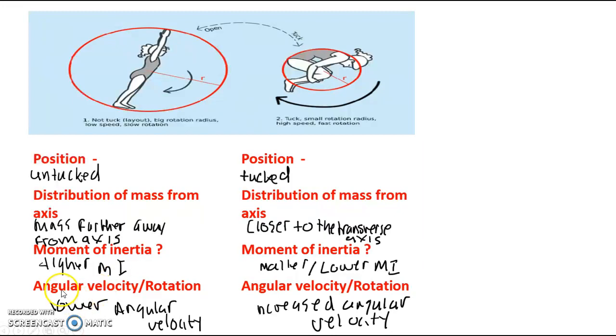So that then directly impacts angular velocity or rotation. I think it's important we understand it in our head as rotation, but the technical term is angular velocity. So there's a lower angular velocity because there's a higher moment of inertia, because the distribution of mass is further away from the transverse axis there.